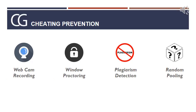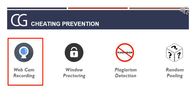Cheating prevention: if candidates are taking tests online from anywhere in the world, how do we prevent cheating? We have four ways to ensure that our online assessments are conducted fairly. The candidate's webcam is recorded during the test to ensure there is no impersonation — for example, someone else taking the test on the candidate's behalf — and to ensure the candidate is not communicating with others either face-to-face or using mobile phones.